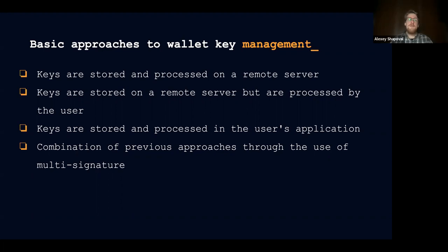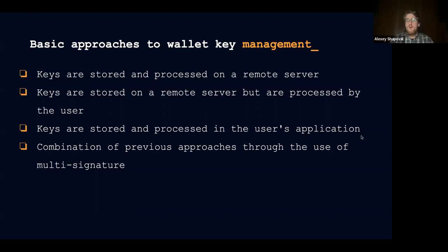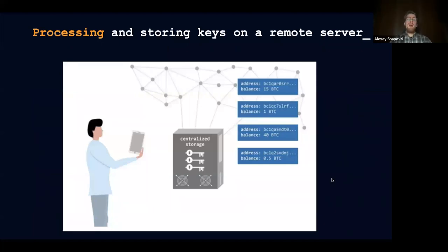The fourth way is a combination of these approaches in a certain form, which allows mitigating inconvenience while still preserving the necessary level of security. These approaches can also be used to increase the level of security without compromising convenience. To do so, you would use multi-signature with two or more keys stored differently in different places — for example, one stored on the remote server but processed by you, and another stored and processed on your device. Your address would then require signatures involving both keys.